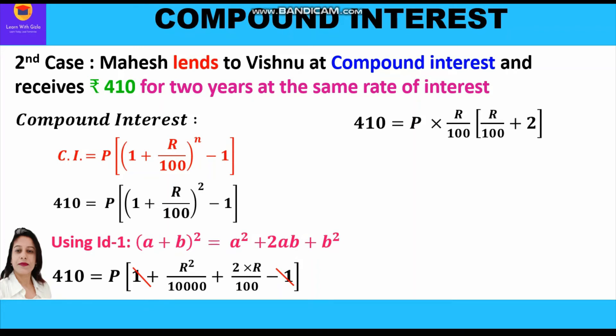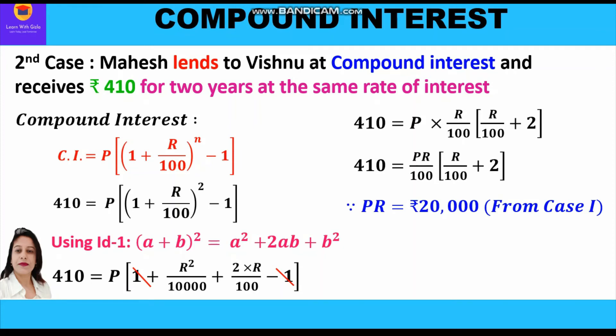So we write: 410 = P × (R/100) × (R/100 + 2). This can be rewritten as: 410 = (PR/100) × (R/100 + 2). From Case 1, we had the first equation PR = 20,000.